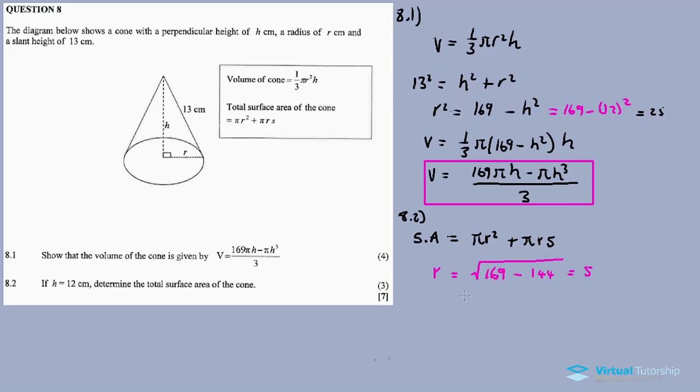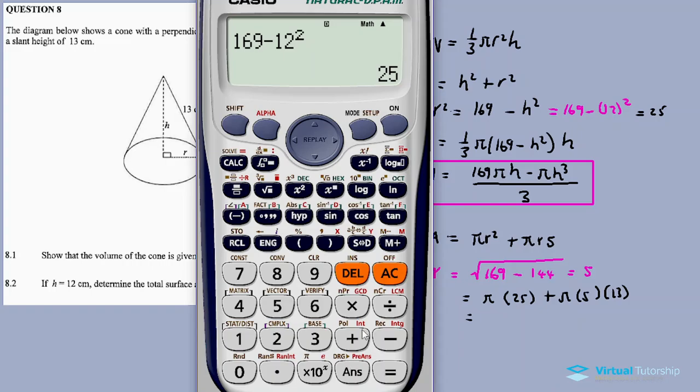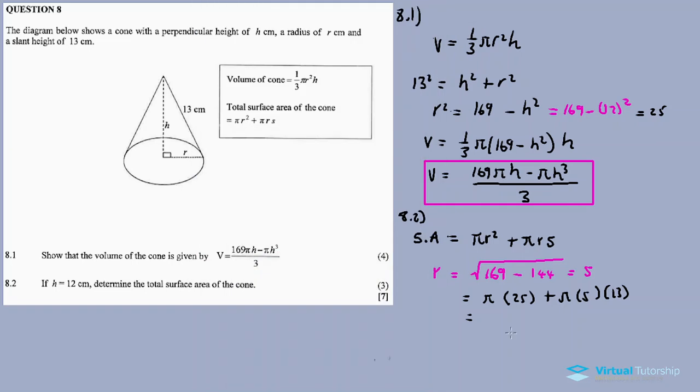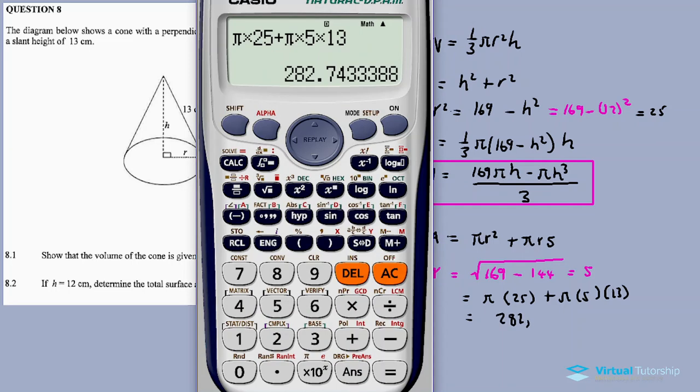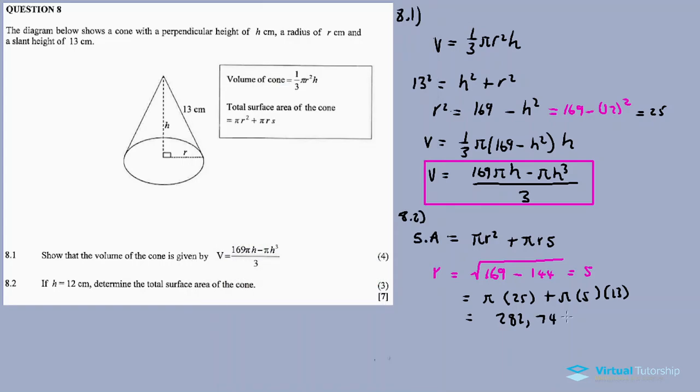Now we substitute into the formula for surface area, so it's pi in bracket, it's R squared. R squared is 25. So it's 25 plus pi times 5, and then the slanted height is 13. So our answer is pi times 25 plus pi times 5 times 13. Our answer is 90 pi, or in decimal form, 282.74 square centimeters. This is our final answer.